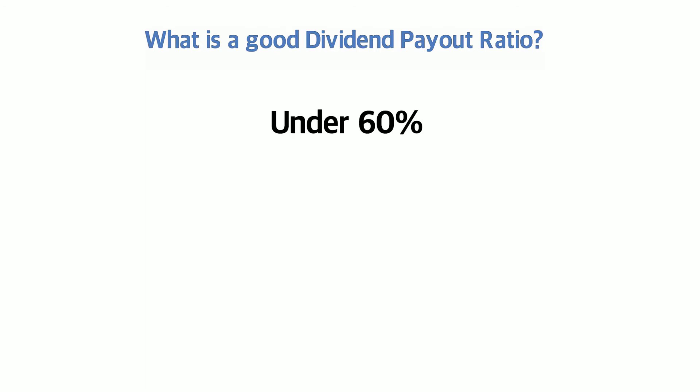Real estate investment trusts, or REITs, need to pay out a higher amount of their net income as dividends, which is 90%. It's always good to look at the dividend payout ratio throughout the years, as this gives you a better idea of where it's trending towards.